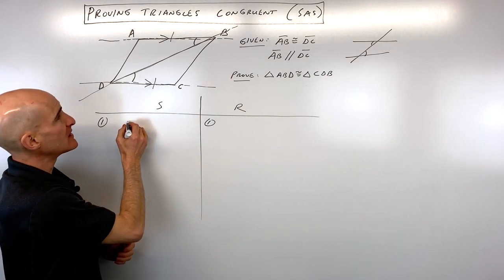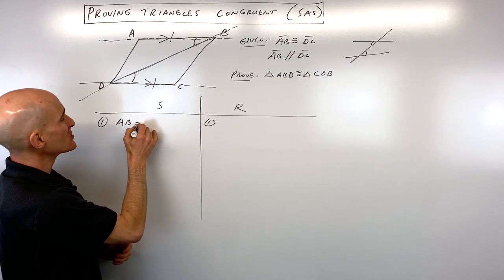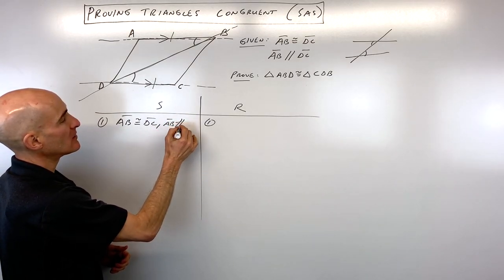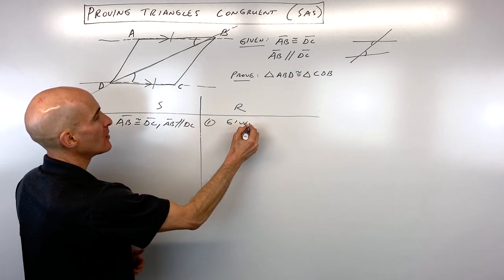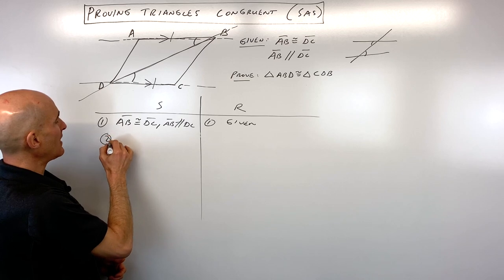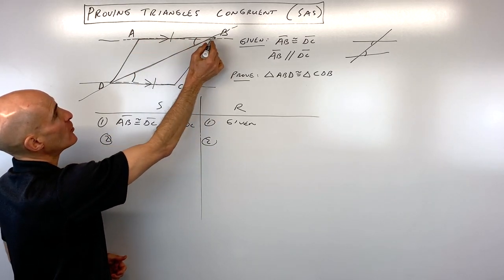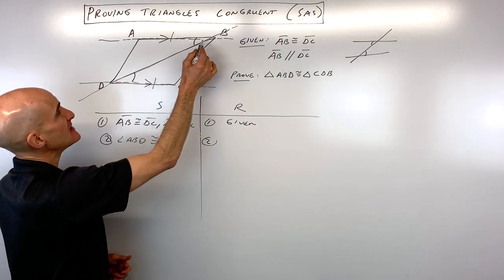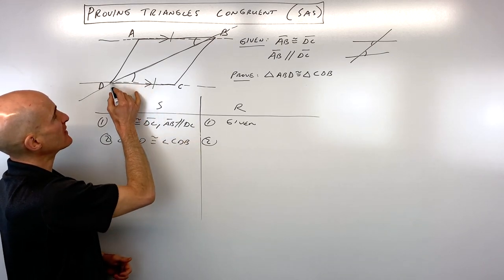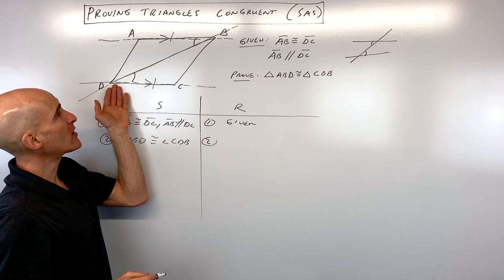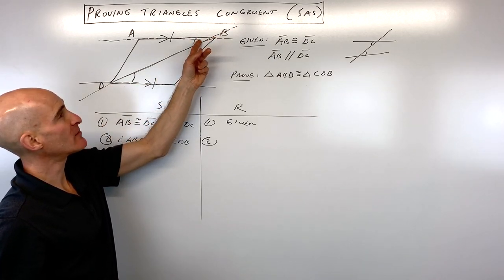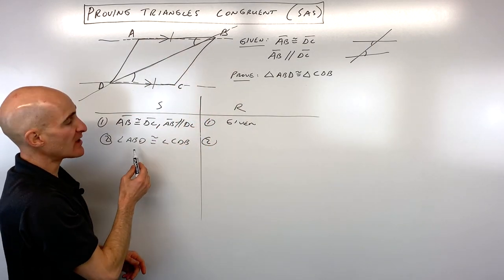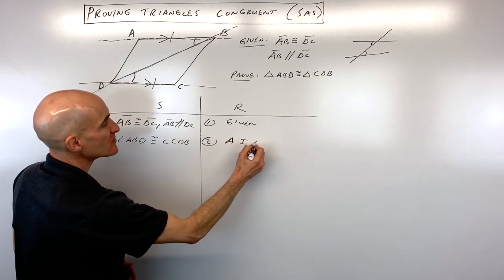Let's write the givens down first. AB is congruent to DC and AB is parallel to DC — just write 'given' as the reason. For step two, we say that angle ABD is congruent to angle CDB by alternate interior angles. Remember when you write angles, make sure the vertex is the middle letter. Don't just call it angle B, because someone might think you mean a different angle. Whenever it's ambiguous, use three points with the middle letter as the vertex or hinge.